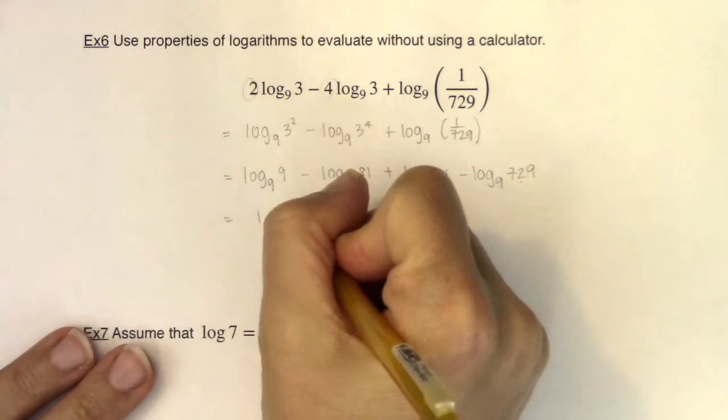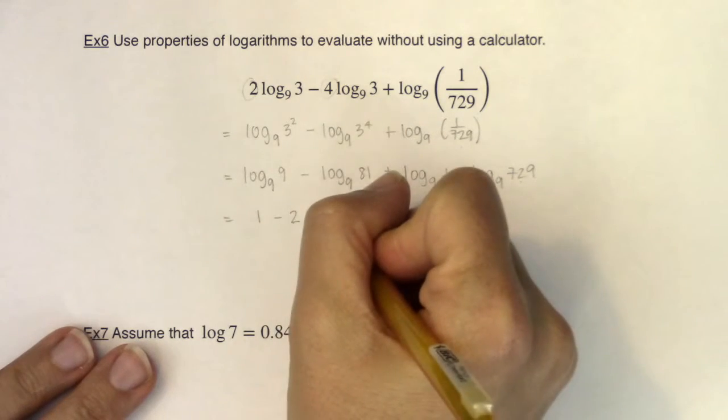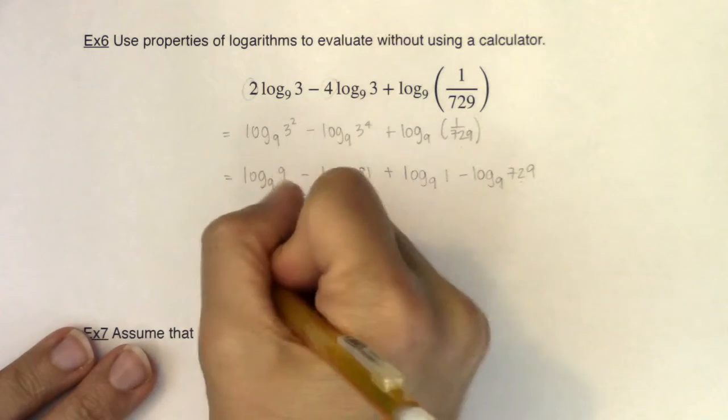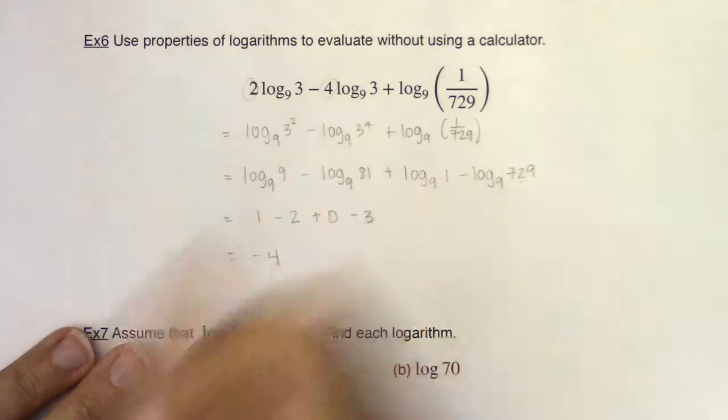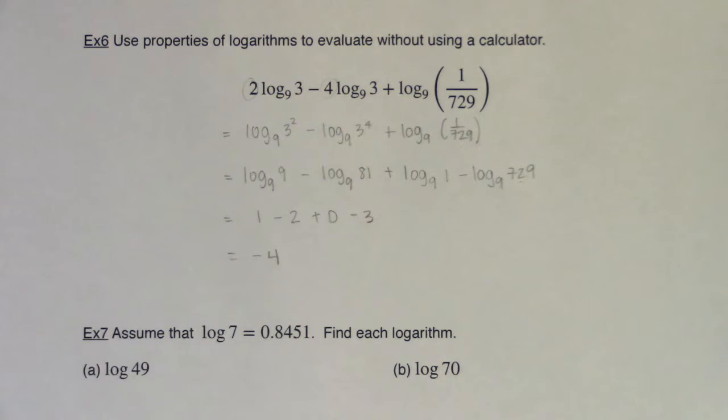So this becomes minus 3. So 1 minus 2 is negative 1. Negative 1 plus 0 is negative 1. Negative 1 minus 3 is negative 4. All right, so that is one way to go and attack this problem.